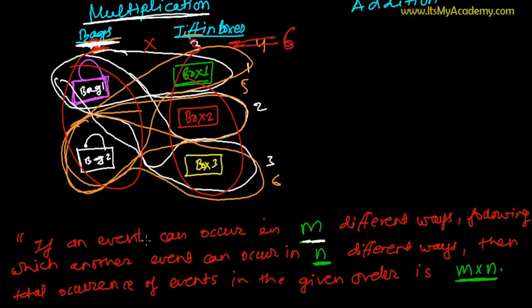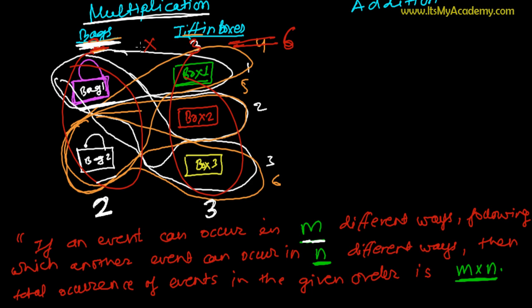Let me explain once again. If an event can occur in m different ways — selecting a bag: pink or white, so there are two different ways — following which another event can occur in n different ways — selecting the tiffin box: green, red, or yellow, so three different ways — then the total occurrence of both events in the given order is m times n. That is two times three equals six ways of selecting both bag and tiffin box. This is the Fundamental Principle of Multiplication.